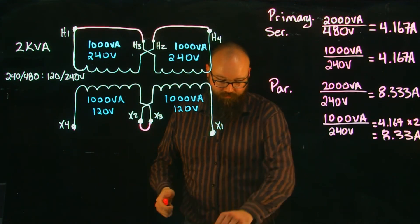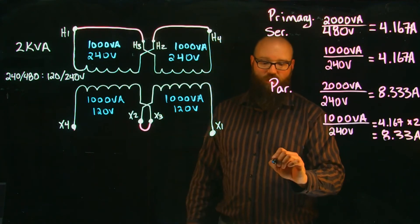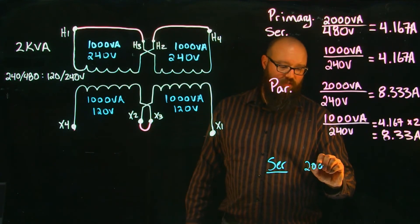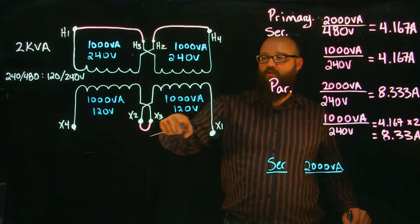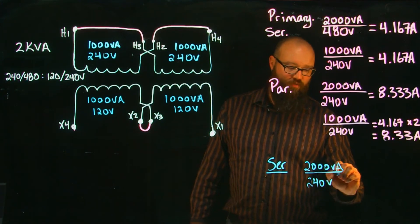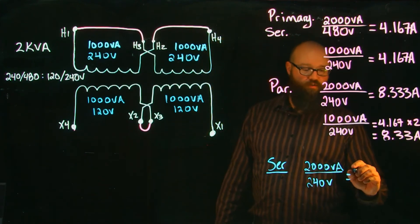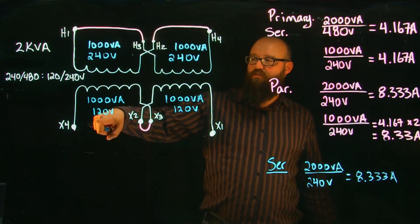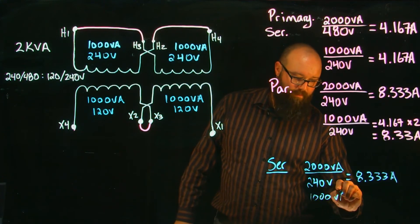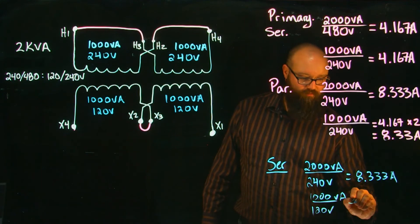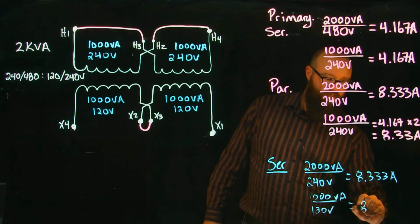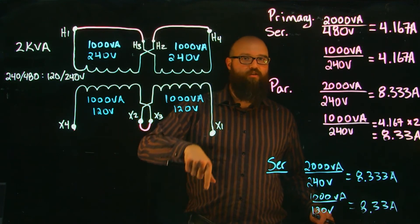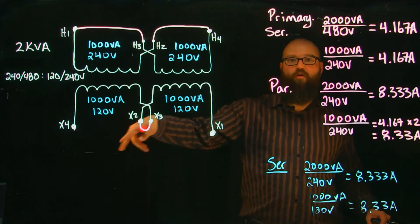On the secondary side, for the series connection the series voltage is 120 plus 120 equals 240 volts: 2000 VA divided by 240 volts gives 8.33 amps. Looking at it individually: 1000 VA divided by 120 volts also gives 8.33 amps, and that same current flows throughout the entire series path — consistent with Kirchhoff's current law.